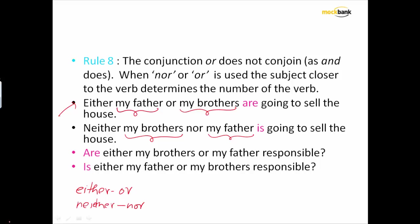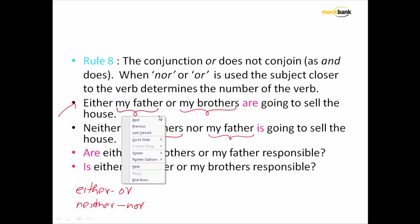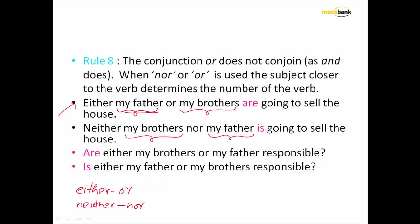The rule says that when 'nor' or 'or' is used, the subject closer to the verb is going to determine what the verb should be. Out of 'my father' and 'my brothers,' which is closer to the verb 'going'? My brothers is closer, and since 'my brothers' is plural, we are going to use 'are.' We should not be using 'is.'